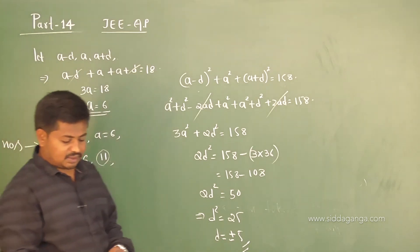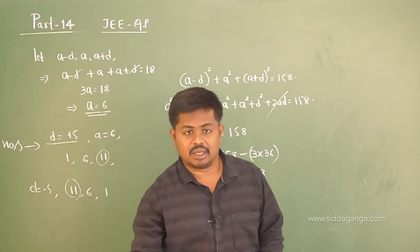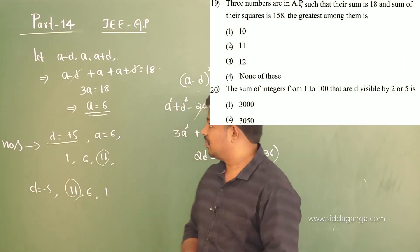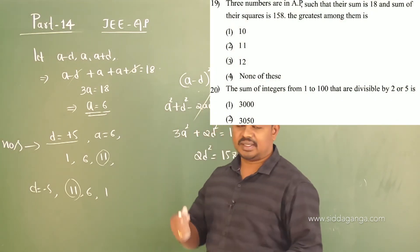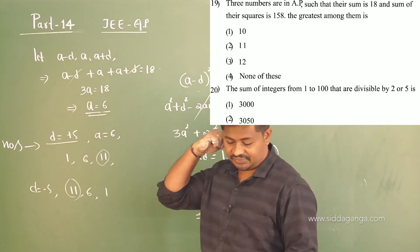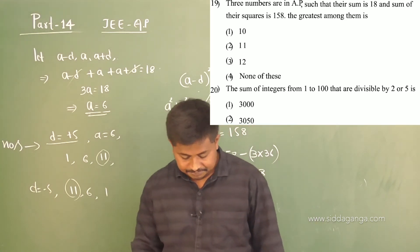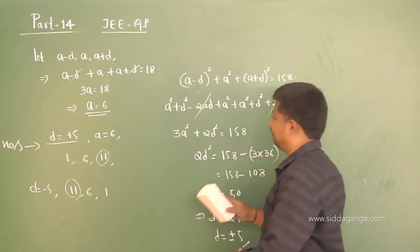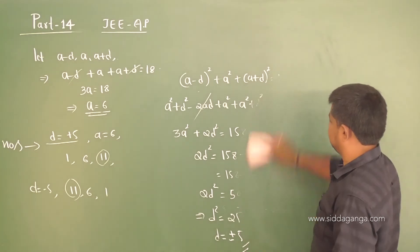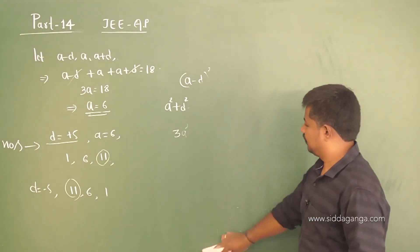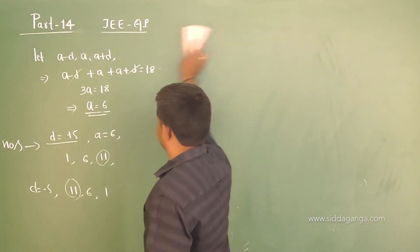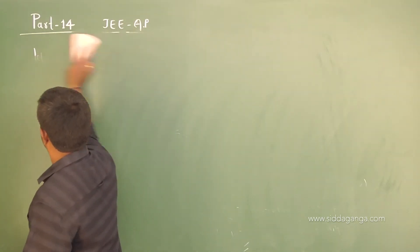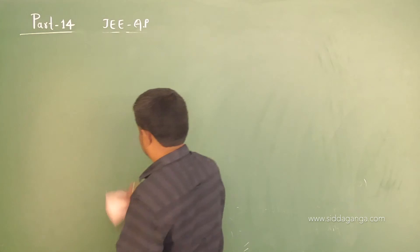The greatest number among the three numbers is 11, such that the sum of the three numbers is 18 and the sum of squares equals 158. Option 2 is the correct one.